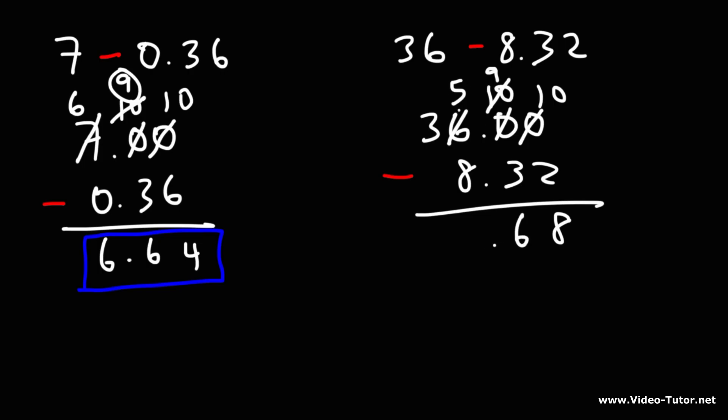We can't really subtract 5 by 8, so we're going to borrow a 1 from the 3. That becomes a 2, and then we'll put a 1 on the 5. So now we have 15 minus 8, which is 7. 2 minus nothing, or you could put a 0 here if you want. 2 minus 0 is 2. Either case, the answer is 27.68.